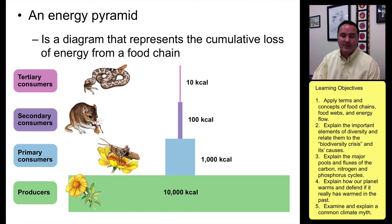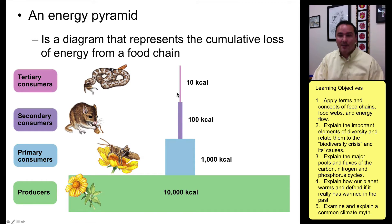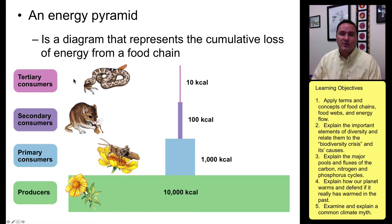Mice eat the grasshoppers and again only about 10 percent transfers, leaving about 100 kilocalories. Then snakes eat the mice and there are now only 10 kilocalories available. This is why you never see fifth, sixth, or seventh level consumers — there's just not enough energy to go around.